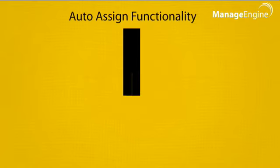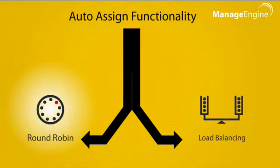You can use the auto-assign option in two ways, round-robin and load-balancing methods, which is what we will simulate here with a use case.